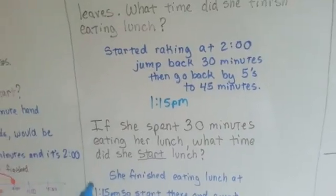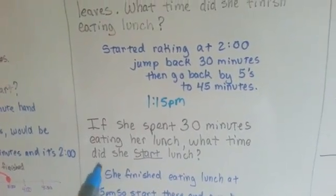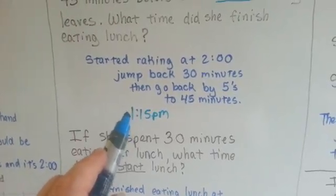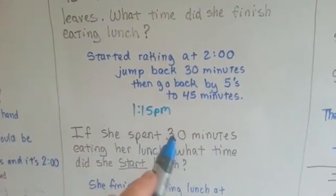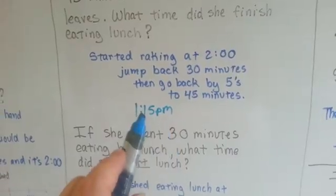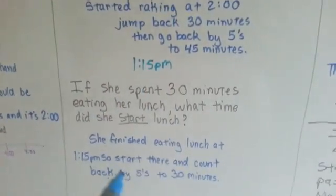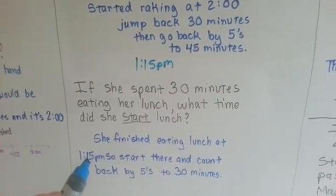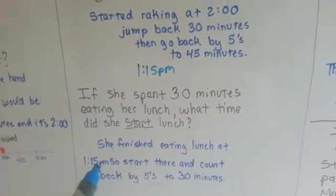If she spent 30 minutes eating her lunch, what time did she start lunch? Well, that's when she finished, at 1:15. So she started eating her lunch 30 minutes before this time. She finished eating lunch at 1:15, so we're going to start there and count back by fives to 30 minutes.